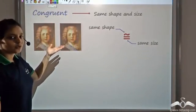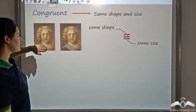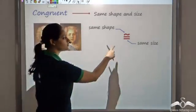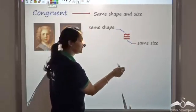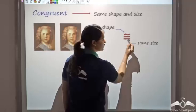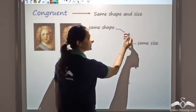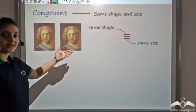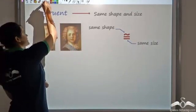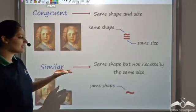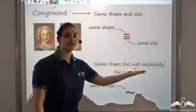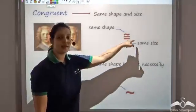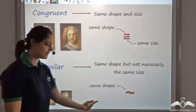So far we've studied about congruent images, which means that they have exactly the same shape and the same size. We use this symbol to represent congruent — the two lines at the bottom show same size, whereas the inverted S shows same shape. Now, what we'll study is 'similar.' Similar means same shape, not necessarily the same size, and since same shape is indicated by an inverted S, what we get is just an inverted S.